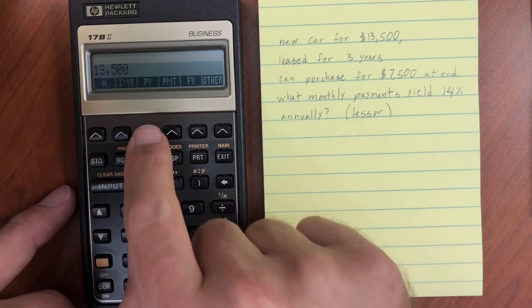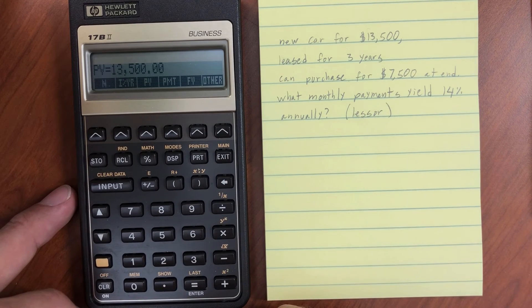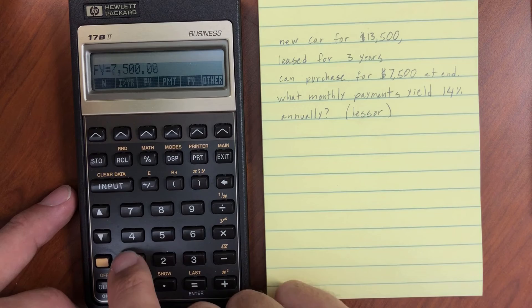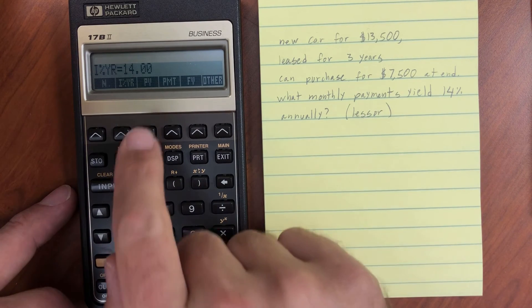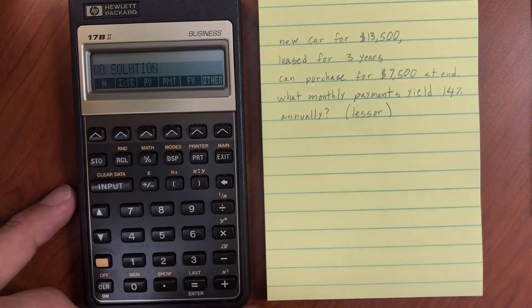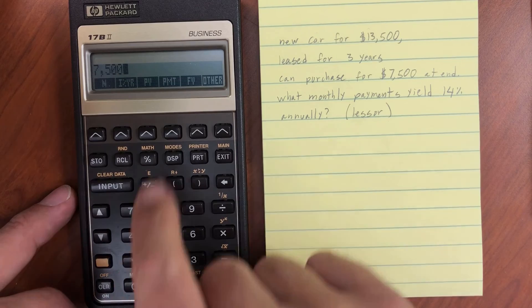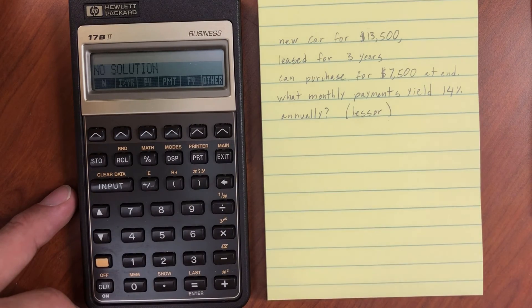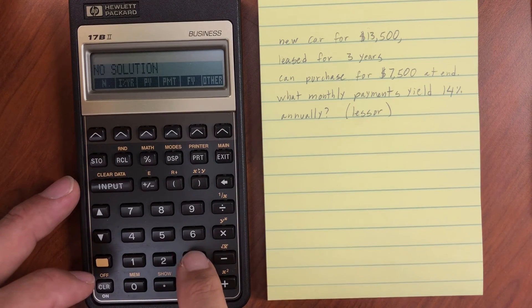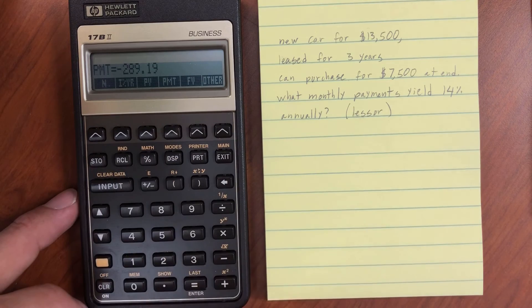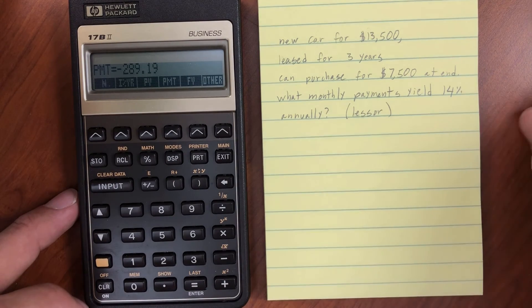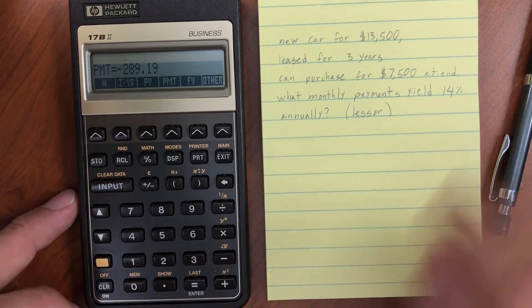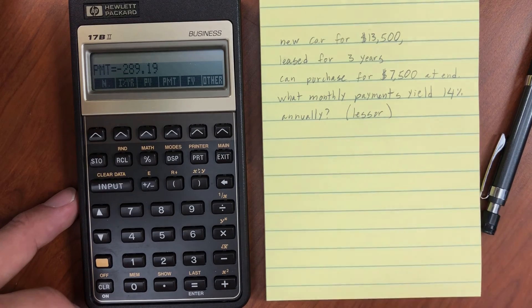Current value is $13,500. Our future value is going to be $7,500. And 14% interest is going to be our interest rate. So what kind of payment are we looking at? Whoops, I'm sorry. I need to change the sign on the $7,500. All right. Now what payments will yield? Three years. Fine. Got it. Forgot to enter in the three years there. So three years, 36 periods. We're going to have $289.19 per month would be what yields a 14% interest rate.